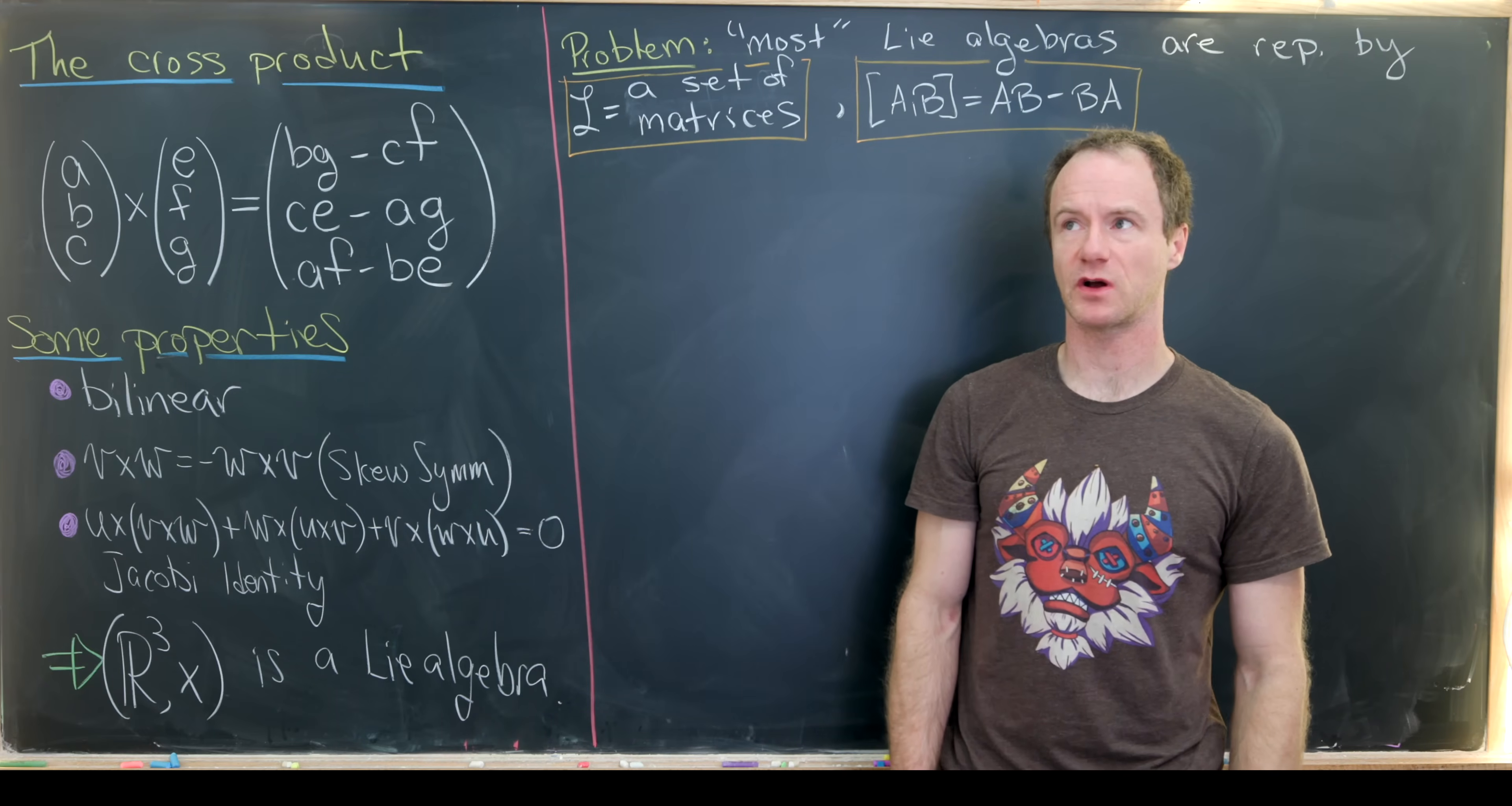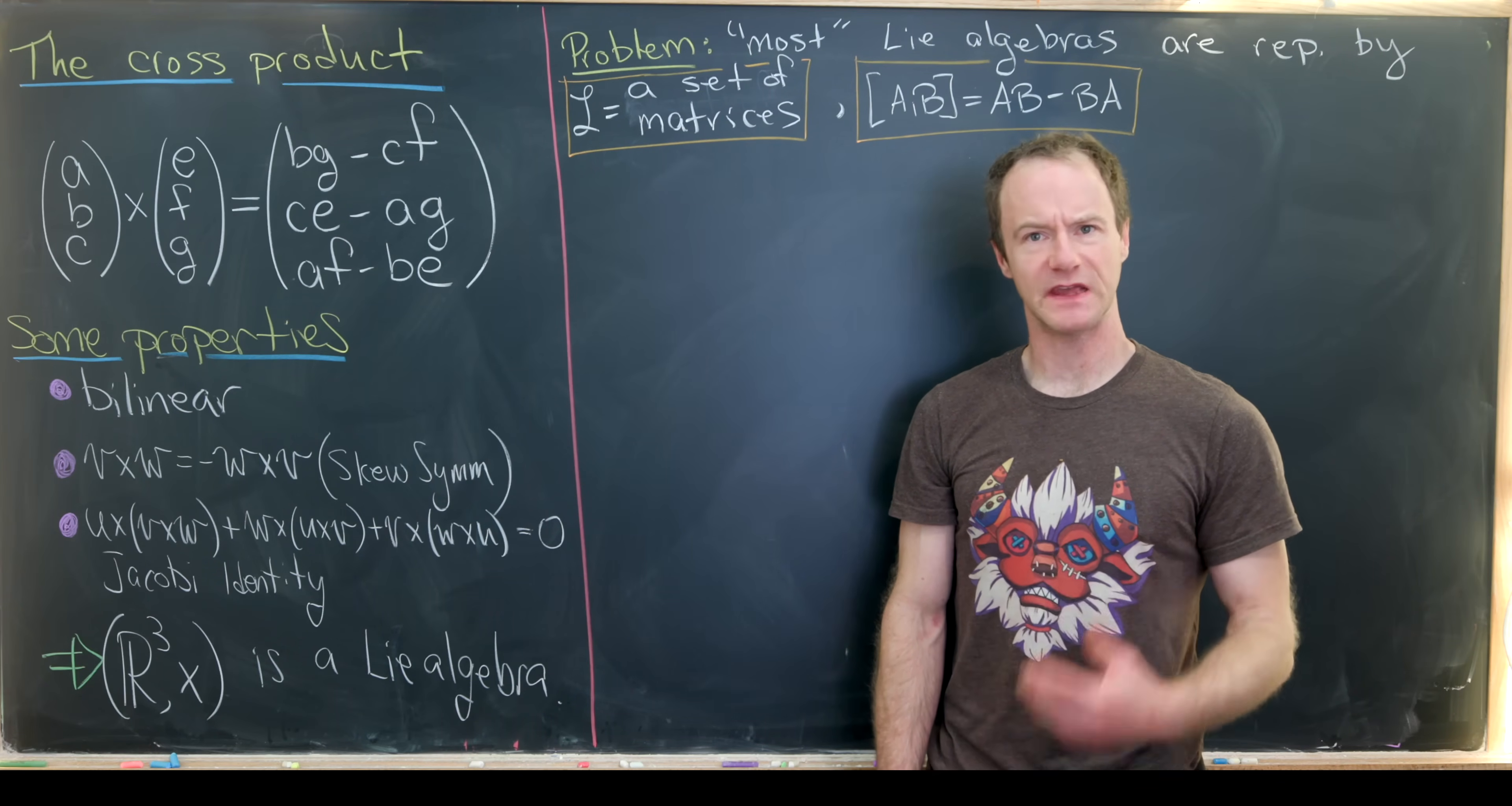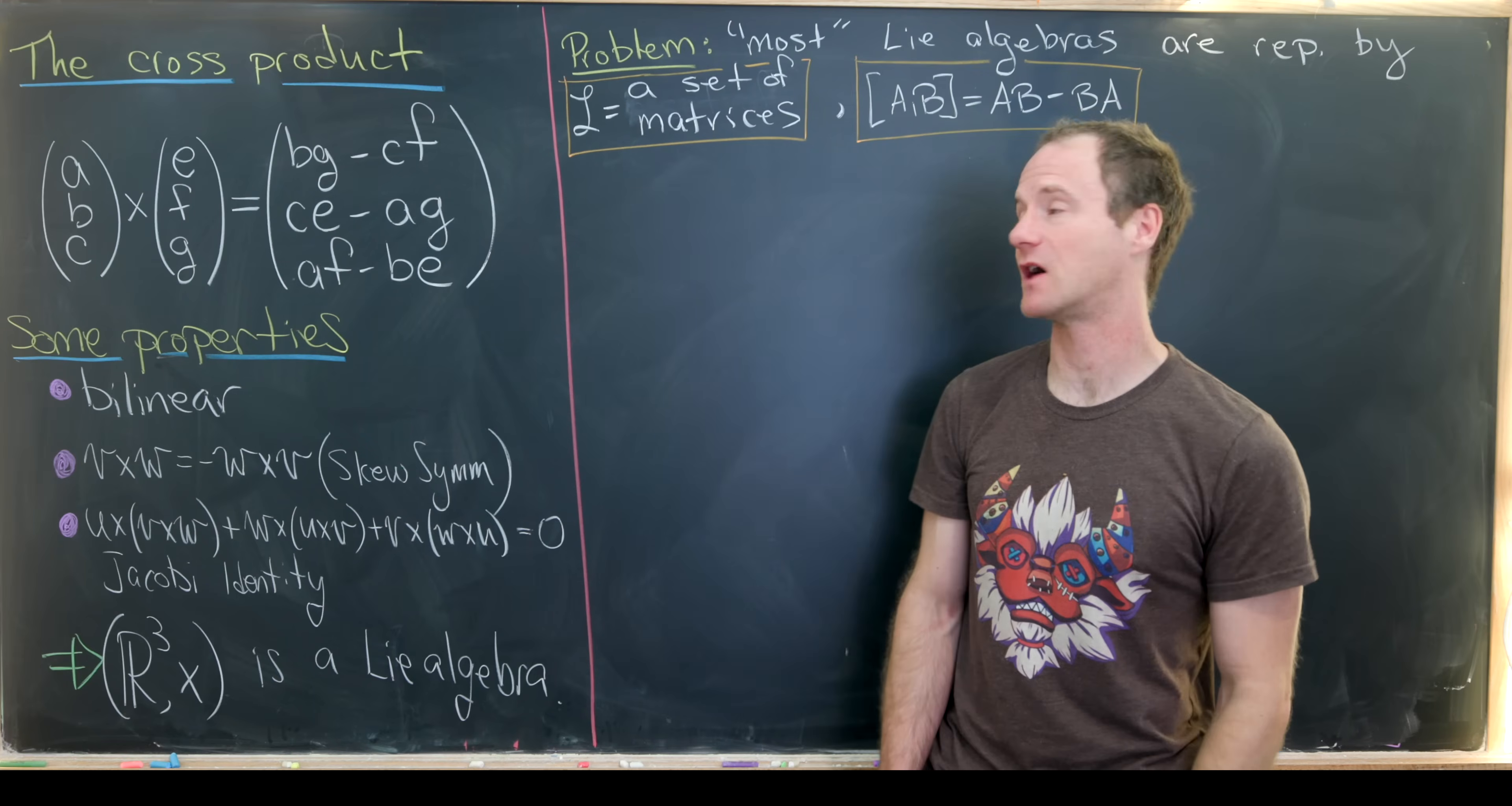Let's recall what the cross product does, maybe qualitatively first. So it takes two vectors and you think about those two vectors as spanning a plane. If those two vectors are parallel, then something else happens, which I won't go into here. And then what the cross product does is it produces a vector which is perpendicular to the plane which is spanned by those two vectors. But what does that mean algebraically?